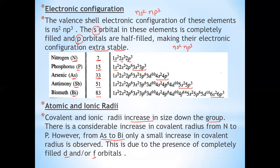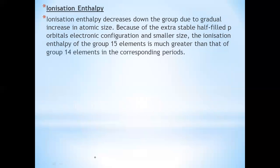The elements arsenic, antimony, and bismuth are not very abundant. They mainly occur as sulfides. The valence shell electronic configuration of group 15 elements is ns2, np3.